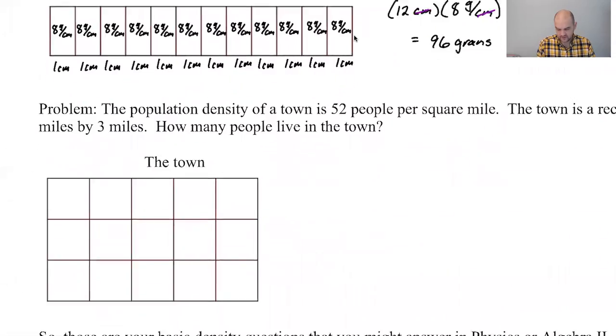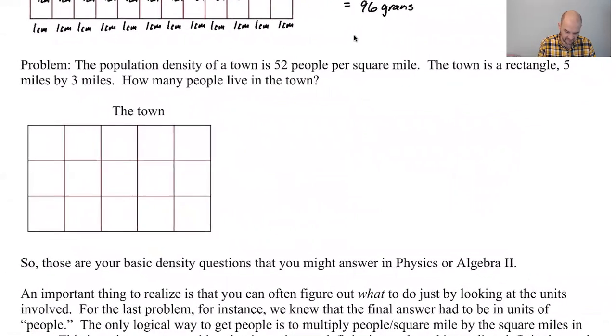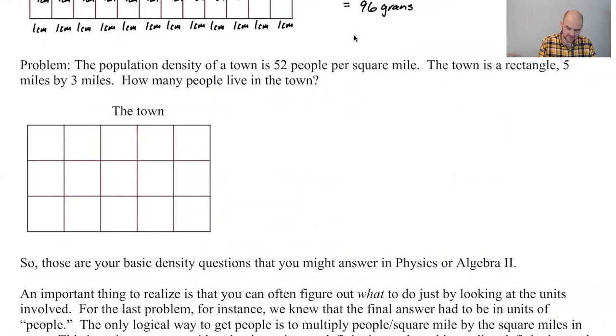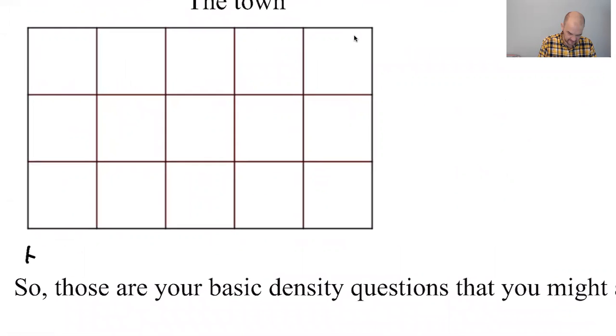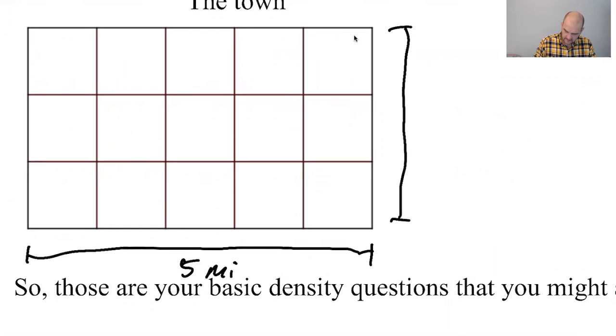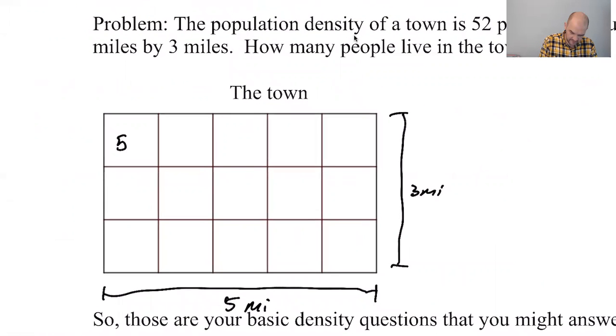Let's look at another problem. The population density of a town is 52 people per square mile. The town is a rectangle that is five miles by three miles. How many people live in the town? All right, so this is five miles.